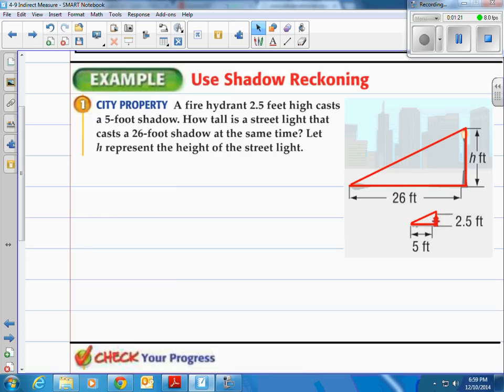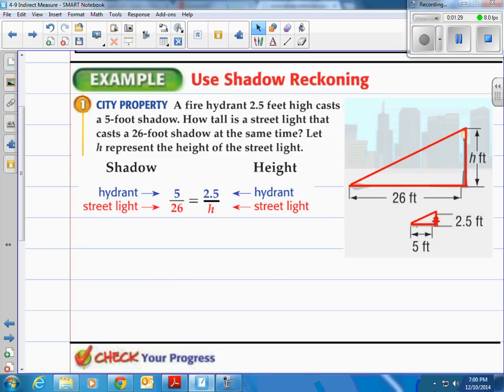So this should bring you back to what we've done before. We use similar figures and we had proportional sides. So here's what we're going to do. We're going to set up a proportion where we take the shadows. In this case we're going to take the 5-foot shadow of the fire hydrant and the 26-foot shadow of the lamp and we're putting it as a ratio, 5 over 26.